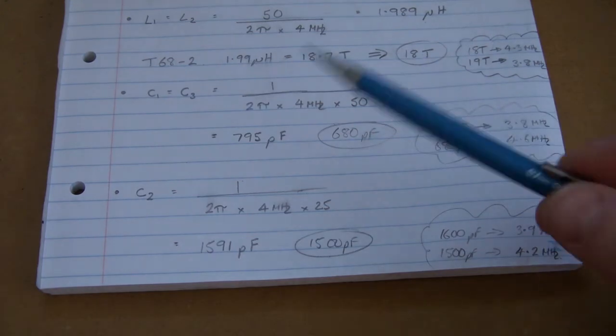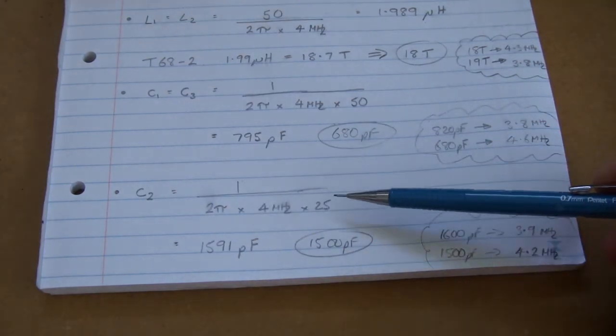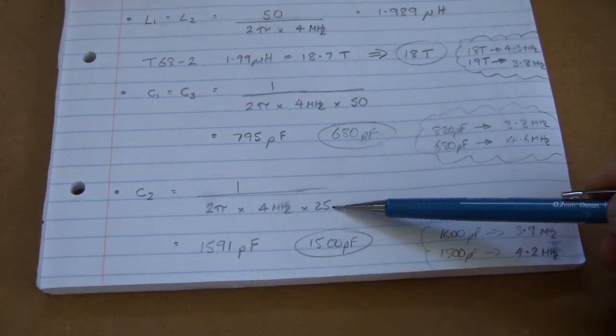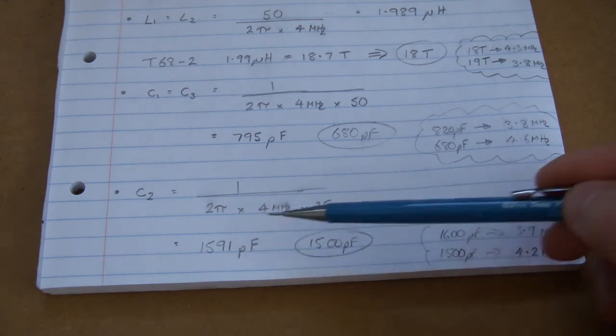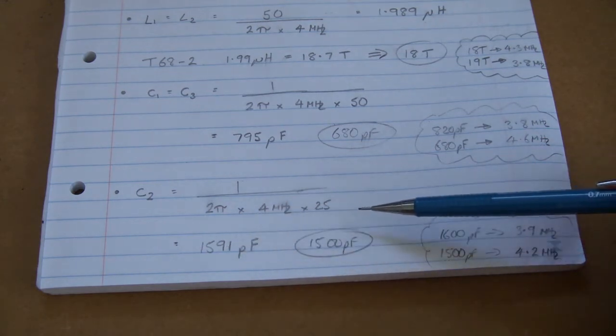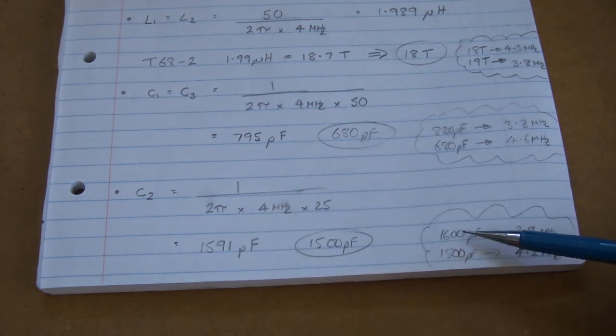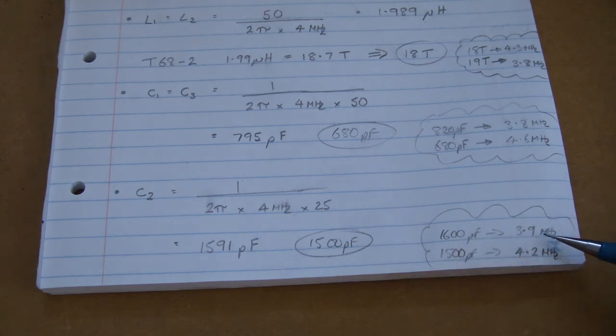And then the final one is C2. So that's the one which has a capacitive reactance of 25 ohms. Go to the same motions, you'll come out at 1591, so I'm going to evaluate 1600 and 1500. And you can see again, same logic. 1600 would be 3.9, 1500 would be 4.2. So I'm going to err on the slightly higher side and run with 1500 picofarads.